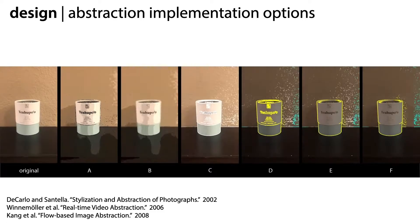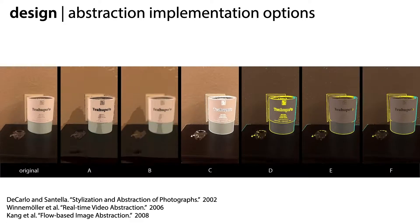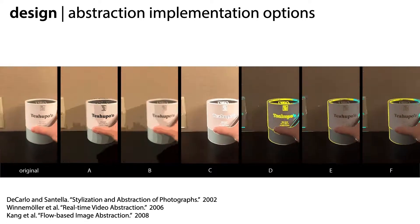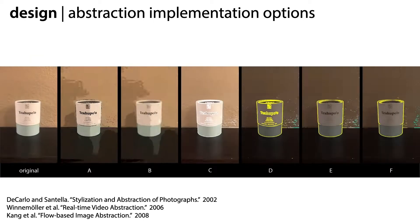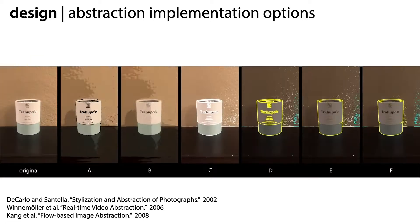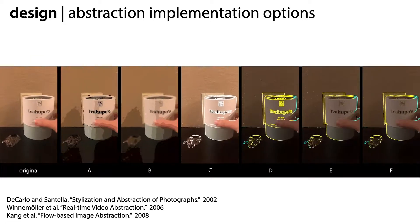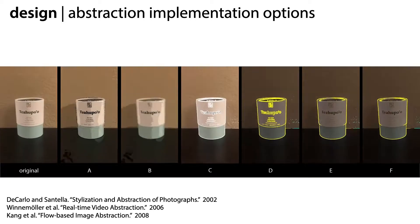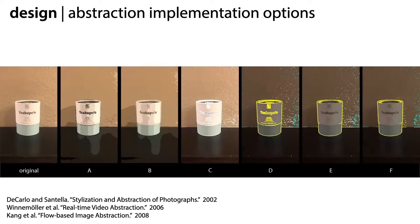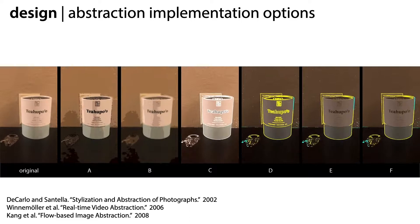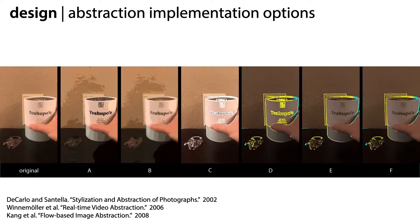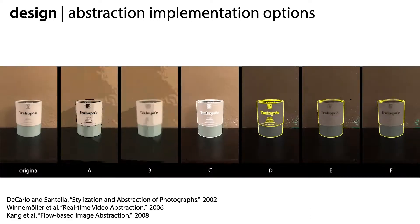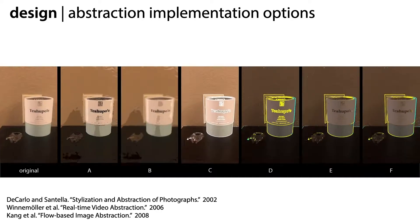I don't have time to describe them in detail here, but inspired by existing work on image abstraction, we incorporated elements of flattening the colors, edge detection, and darkening of the image. Given these overlay options, we conducted an online survey with 29 participants to better understand which elements were helpful for recognizing clutter, in order to determine the design of our final overlay.